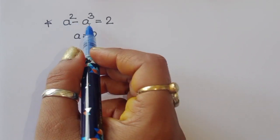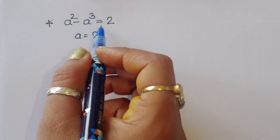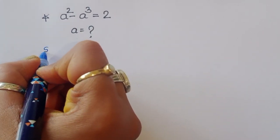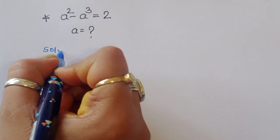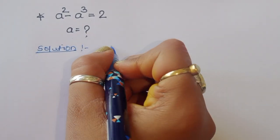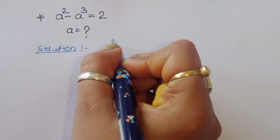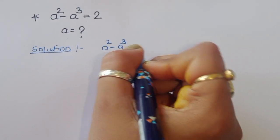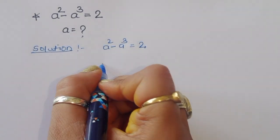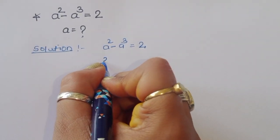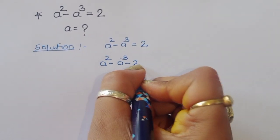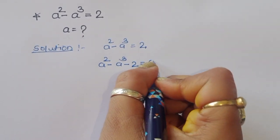The question is: given a squared minus a cubed is equal to 2, we have to find out the value of a. Let's see how we can find the solution. We write a squared minus a cubed is equal to 2, which gives us a squared minus a cubed minus 2 is equal to 0.